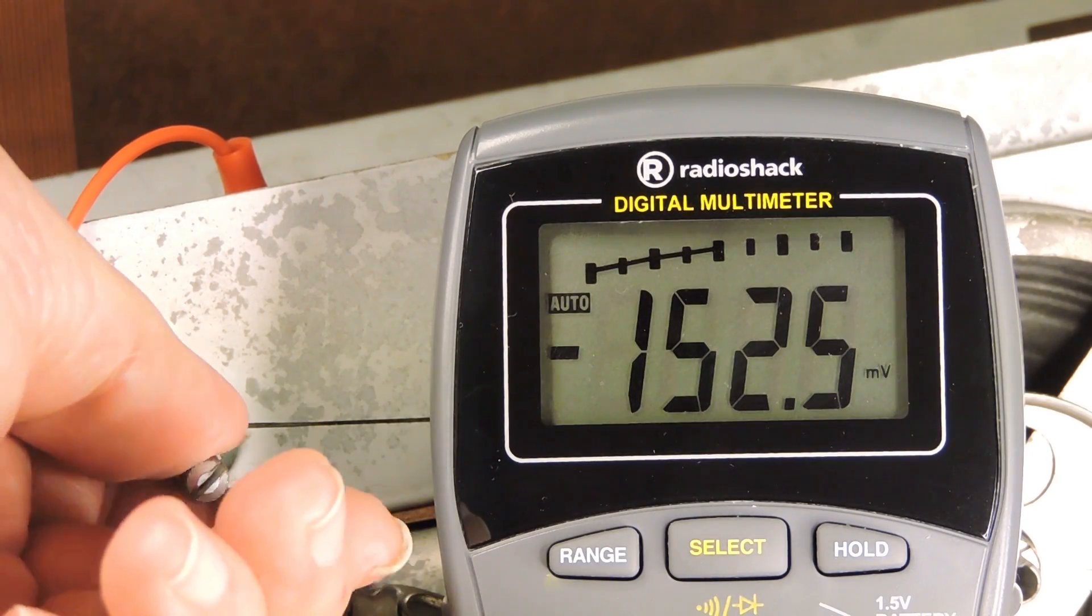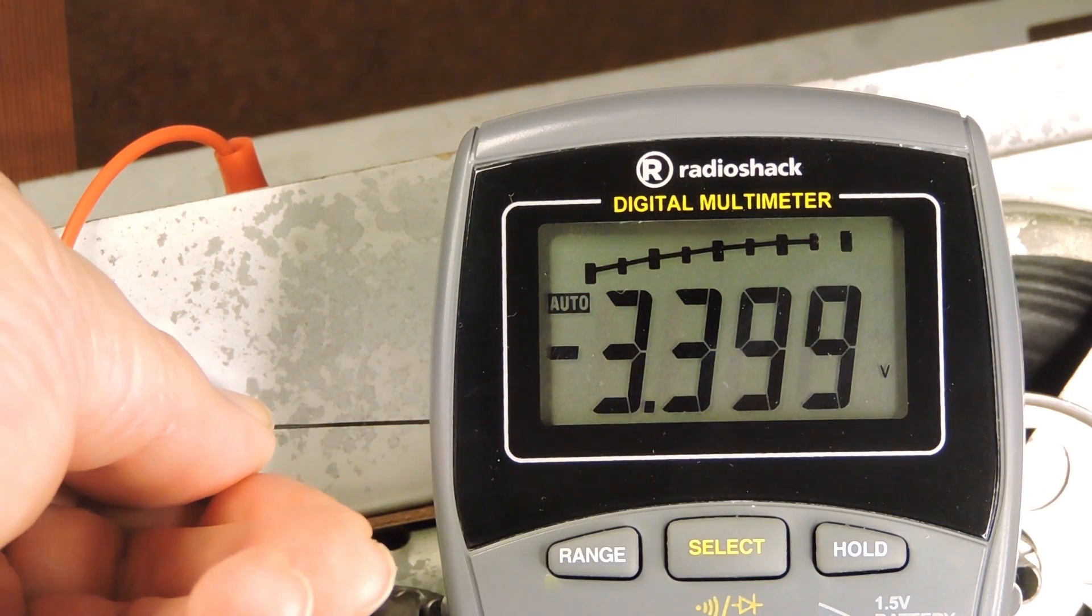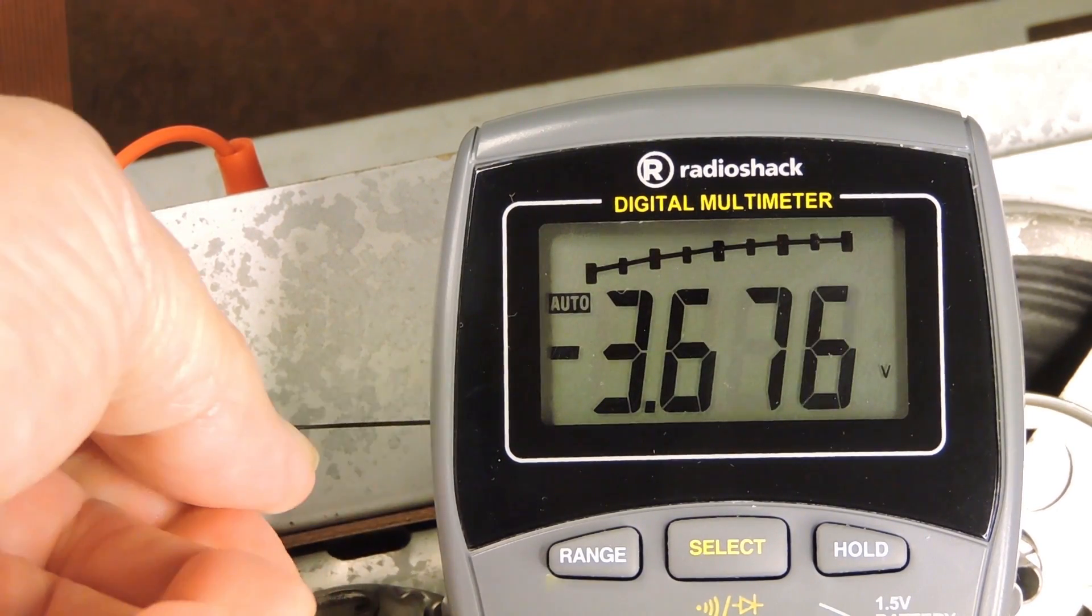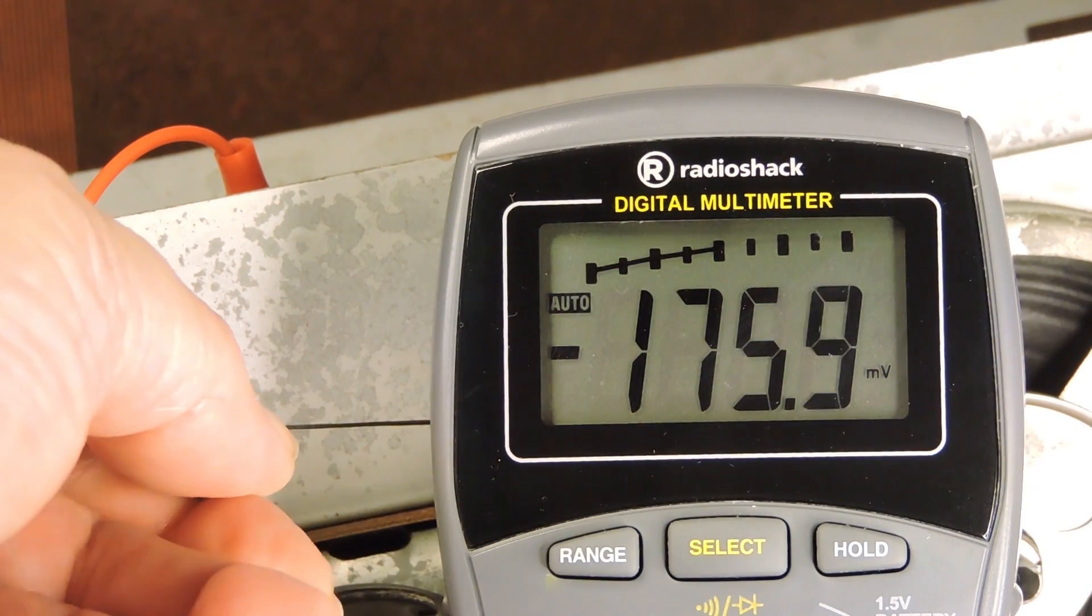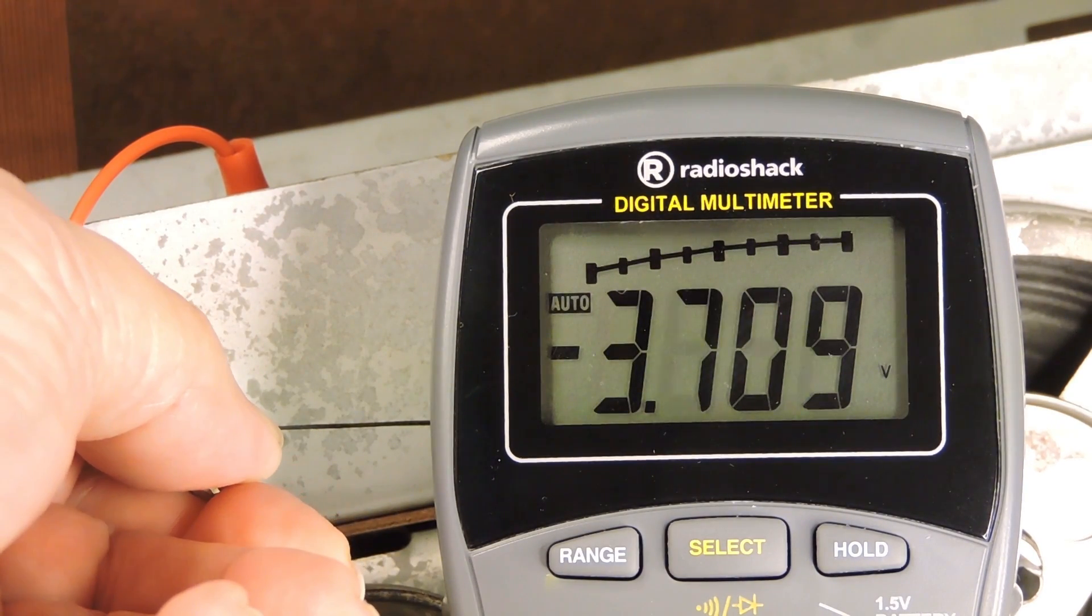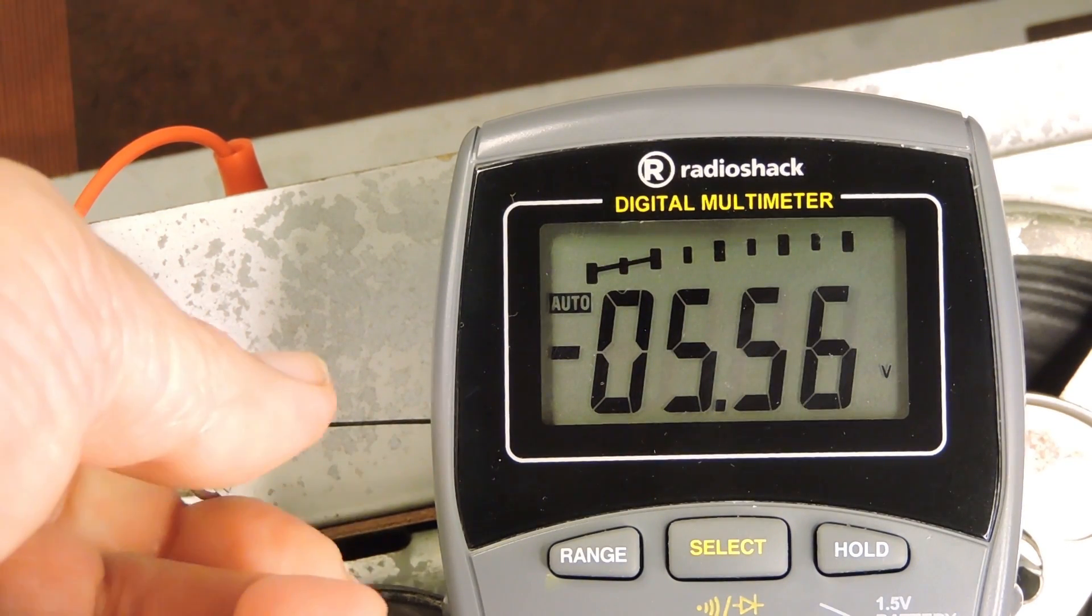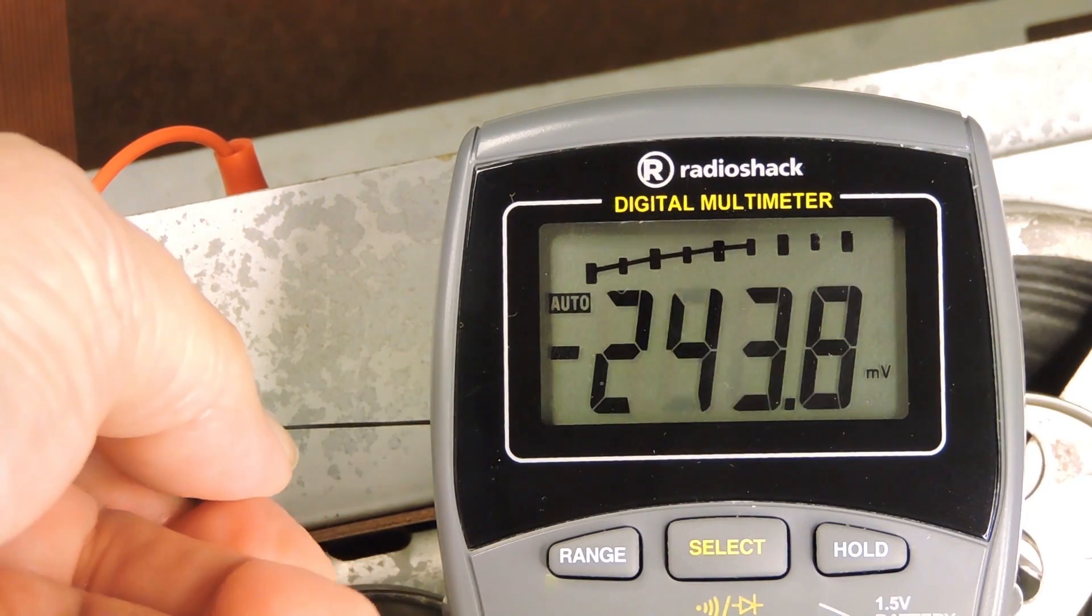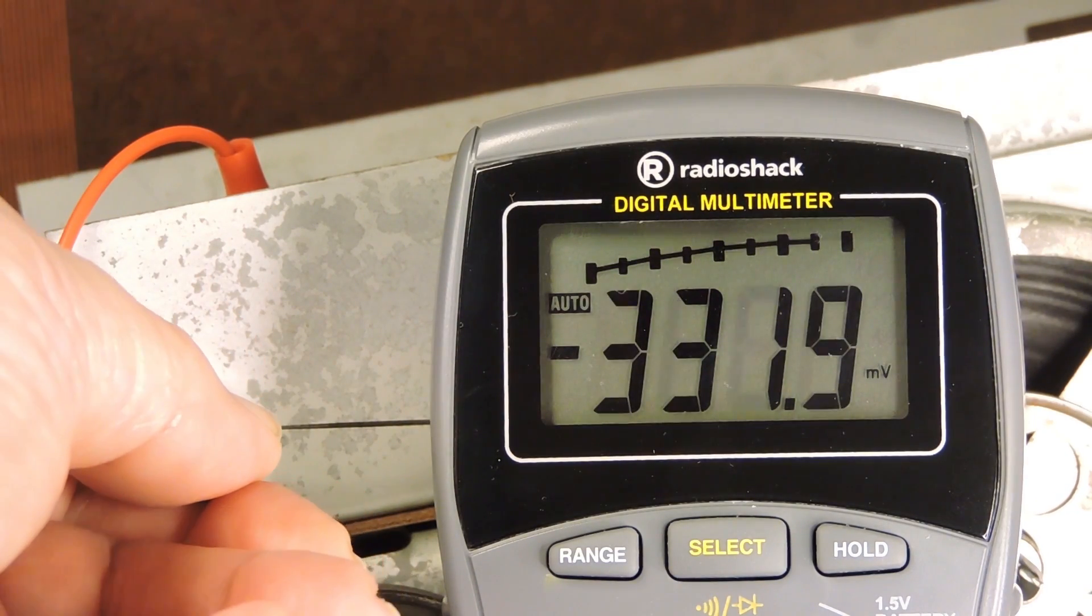Here we're starting out at about 150 millivolts. Now we've come up on a station and we have more negative voltage. Now this is a stronger station, we've got about minus 6 volts, a little bit more. We'll just tune through here and see how this negative AVC voltage changes.